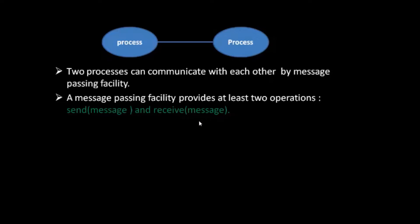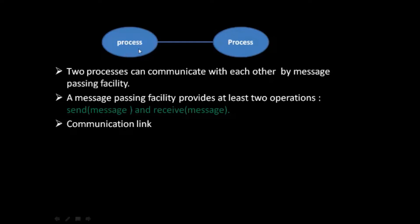Messages sent by a process can be of a fixed size or they can be of variable size. Two processes which want to communicate with each other must send and receive messages from each other, so there must exist a communication link between them.